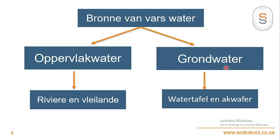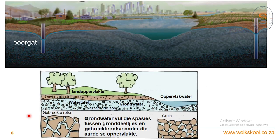By grondwater gaan dit oor die water wat deur filtreer deur die aardse boonste laag tot daar onder waar die watertafel lê, en daar kry jy dan ook akwafere of water draende rotse. By riviere en vleilande wil ek jou sê - een van die belangrike dinge is ons in Suid-Afrika het regtig nie die tipe riviere soos die Nyl in Egipte en die groot Kongorivier. Selfs van ons klein riviere word so oorbenut weens besproeiing dat hulle amper heeltemal opdroog.